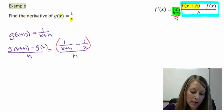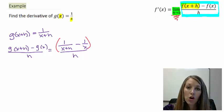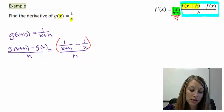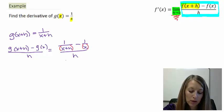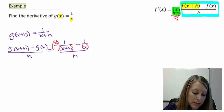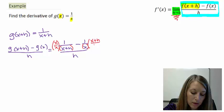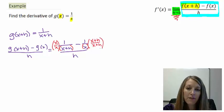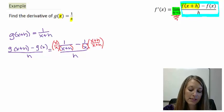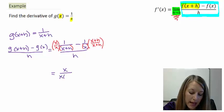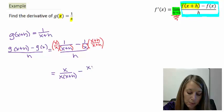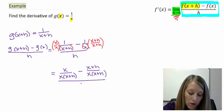And the way that we are going to do that is just simplify our numerator. So we have fractions here. The way that we add or subtract fractions is we need a least common denominator. This x plus h is 1 unit and my x is 1 unit. So I have to multiply by my opposite pieces to get my LCD. So I multiply my first fraction by the x and I multiply my second fraction by the x plus h. So this gives me x over x times x plus h minus x plus h over x times x plus h. And that's still all over h.